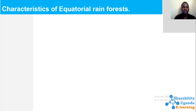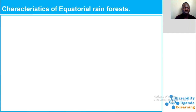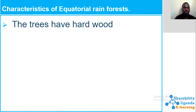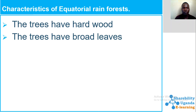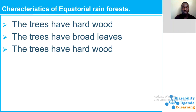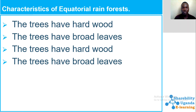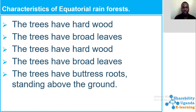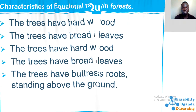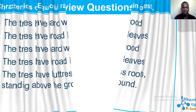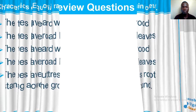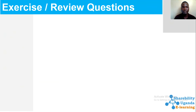Characteristics of equatorial rainforests: the trees have hardwood, trees have broad leaves, and the trees have buttress roots standing above the ground.